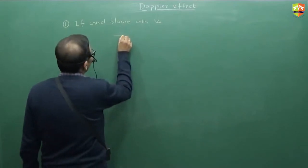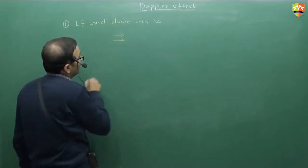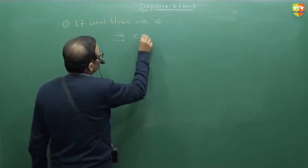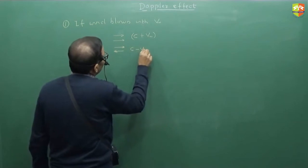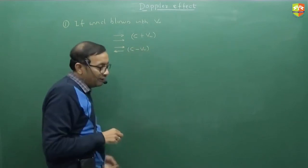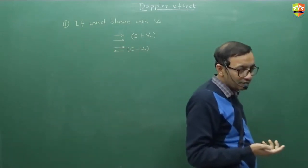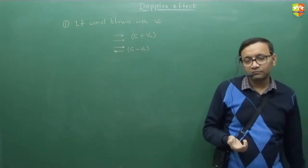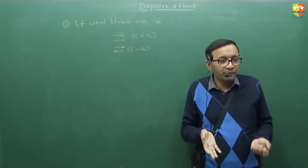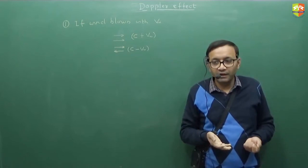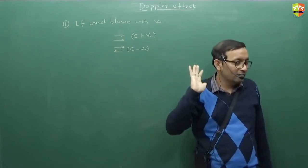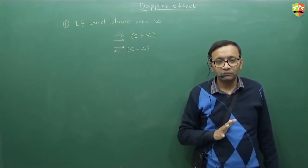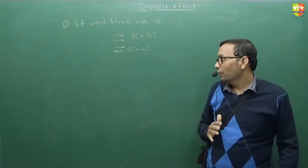If wind is blowing like this and sound is also going like that, c minus vw. So effect of wind is, it changes the velocity of sound, because that's the medium itself. So instead of c, you have to write that in all the formulas that you have written.